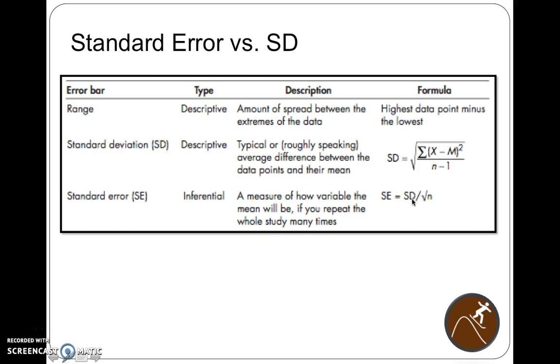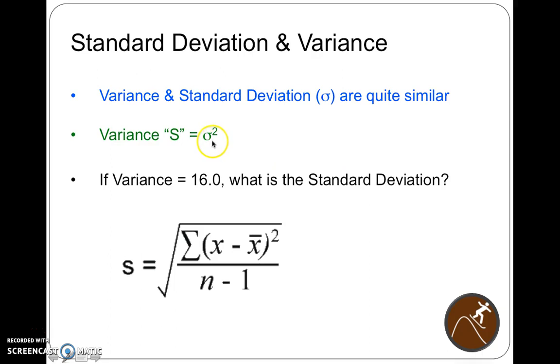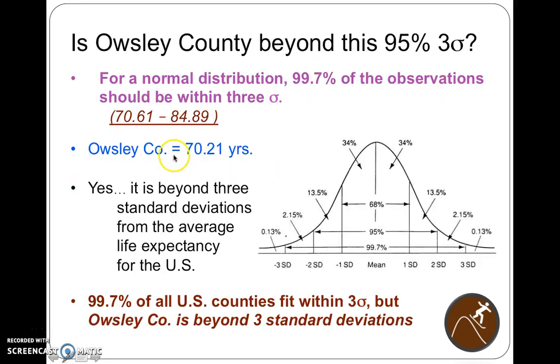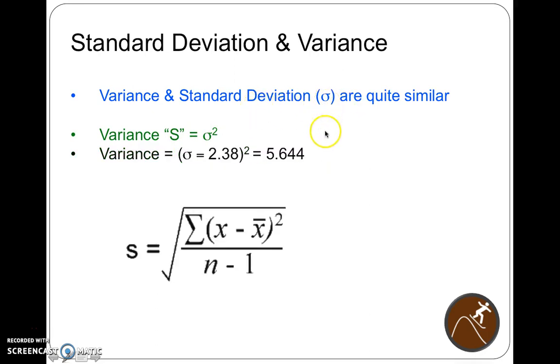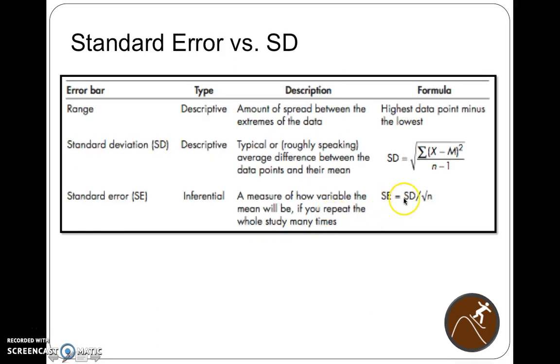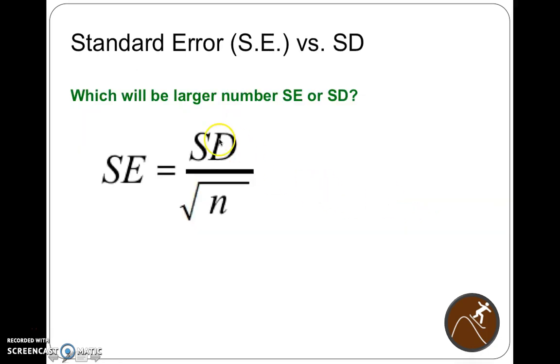Standard error relates to the standard deviation, but it takes into consideration the population size. So in order to get standard error, standard deviation is often required knowledge. If you have the standard deviation, or sometimes known as sigma, over the square root of n, you can get the standard error.